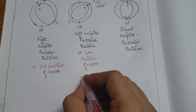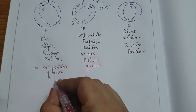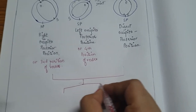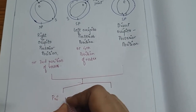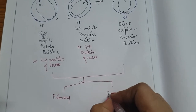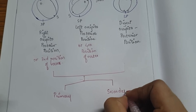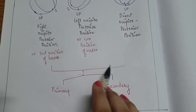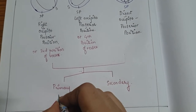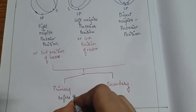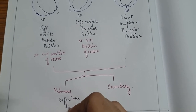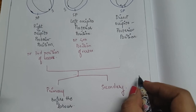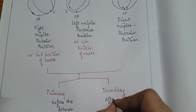These three positions may be primary or secondary. Primary means these positions may be developed before the onset of labor, and in the case of secondary, these positions may develop after the onset of labor.